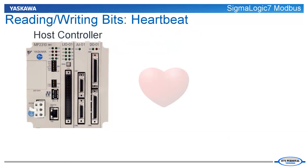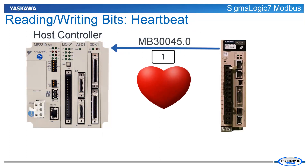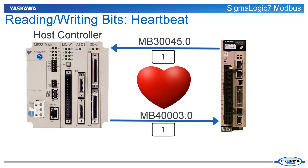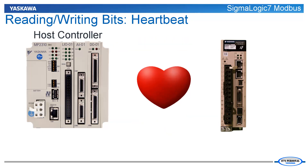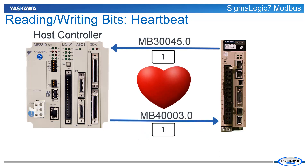It is essential for the host controller to establish and maintain a heartbeat with the Sigma Logic 7 Modbus. This is accomplished by reading register 30045 bit 0 and reflecting that value back to register 40003 bit 0. The heartbeat will normally toggle on and off every 500 milliseconds. If the heartbeat reflection at register 40003 bit 0 does not change state within one second, the Sigma Logic 7 Modbus will automatically stop all motion and disable the servo.